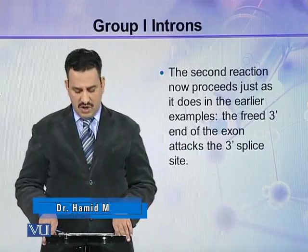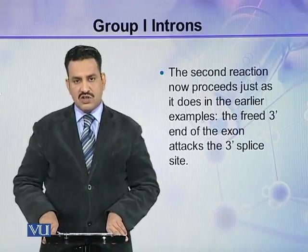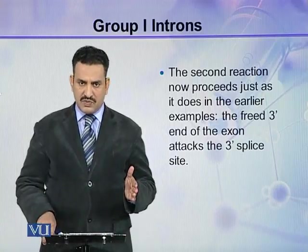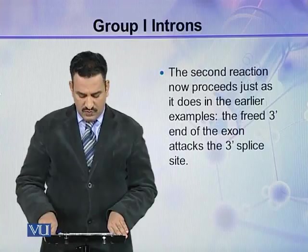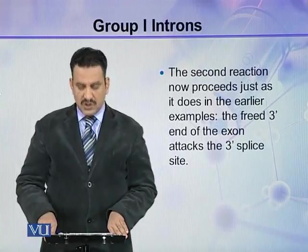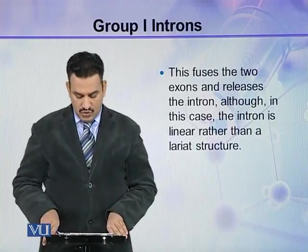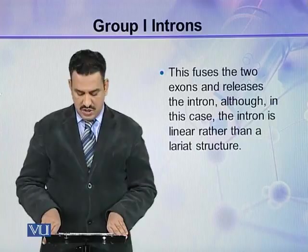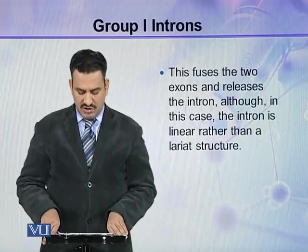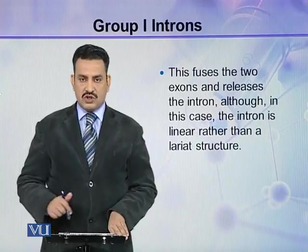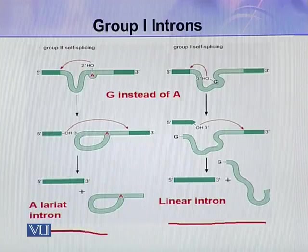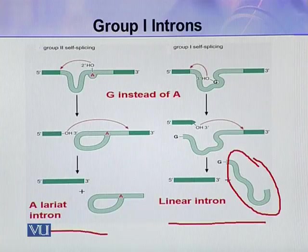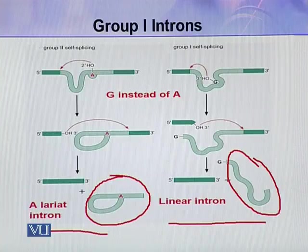The second reaction now proceeds just as it does in earlier examples — that is, in the case of nuclear pre-mRNA splicing and Group 2 introns. The freed 3' end of the exon attacks the 3' splice site, fusing the two exons and releasing the intron. In this case, however, the intron is linear rather than a lariat structure. Here you can see the comparison of Group 2 and Group 1 self-splicing: in Group 1, the intron is released as a linear intron, whereas in Group 2 the intron is removed as a lariat.